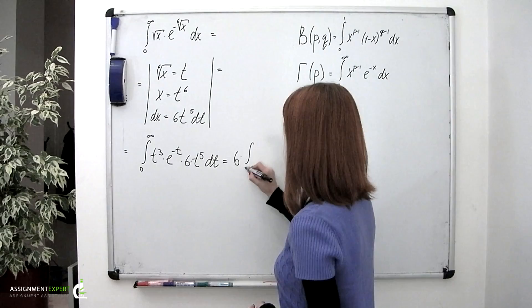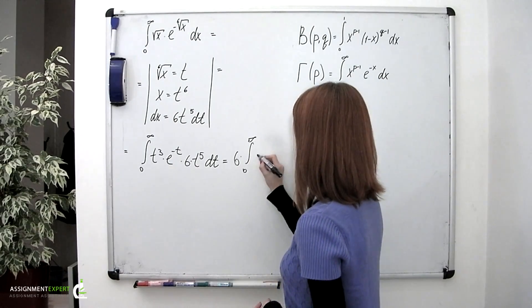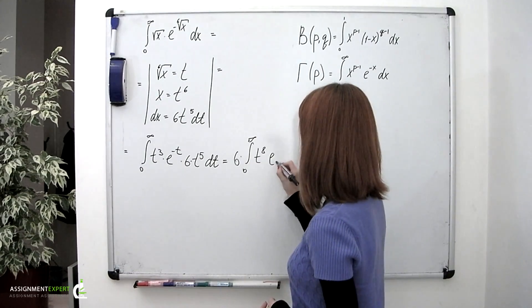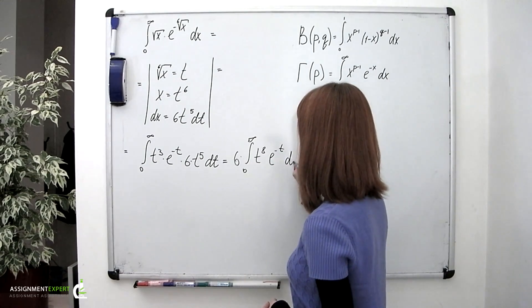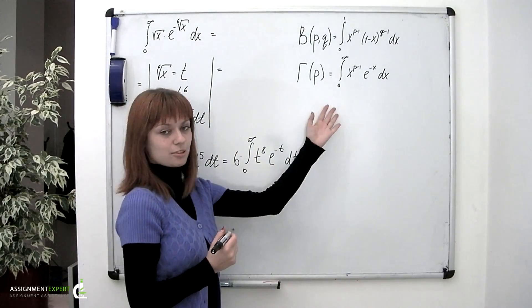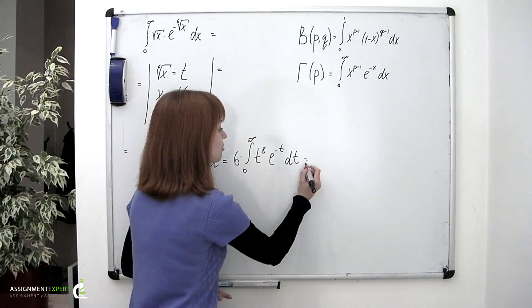Times 6 gives us the integral from 0 to infinity of t to the 8th times e to the power of negative t dt. And this integral looks like gamma function. So, according to the formula,